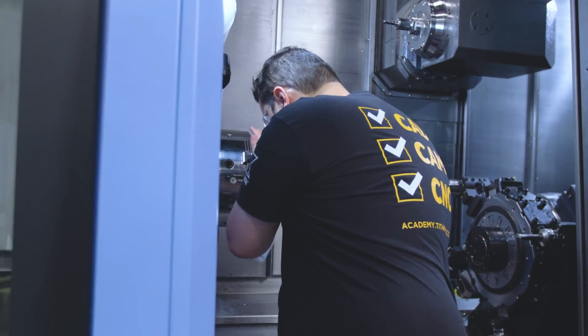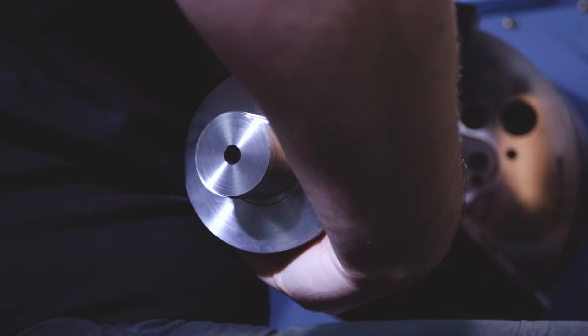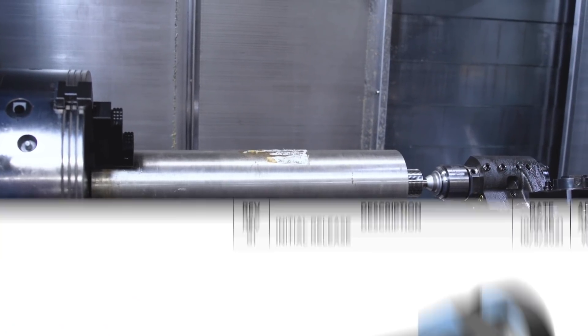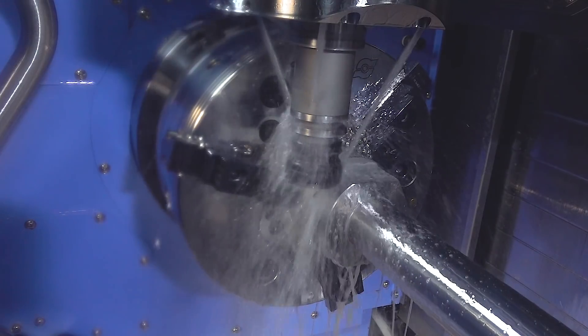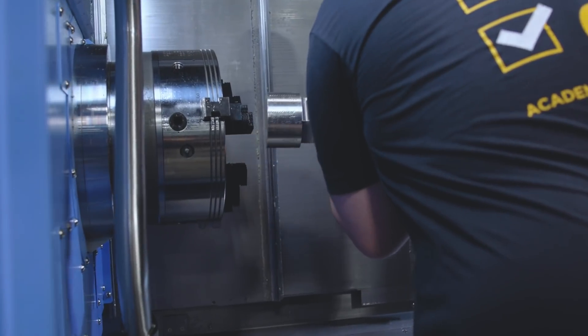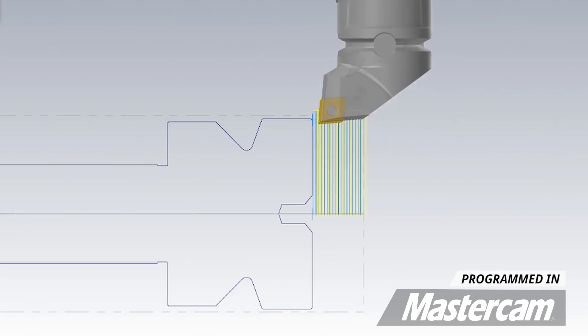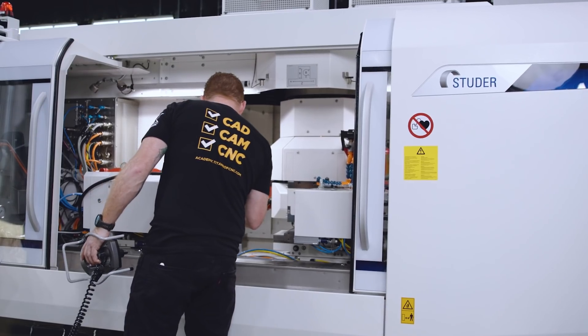Now today we're actually going to machine the long shaft of this part. We're going to leave it a little bit big, around 10 thousandths for the grinding operation. After that we're going to machine some flats and then we're going to flip the part around and finish it off on the back side.